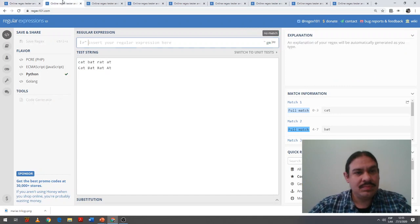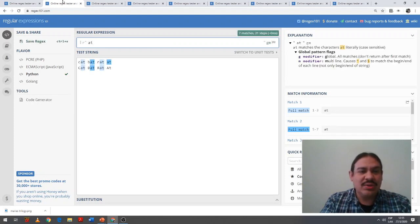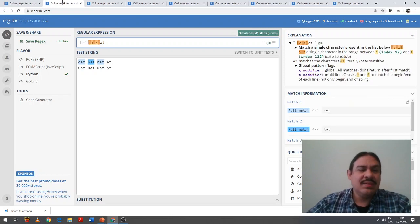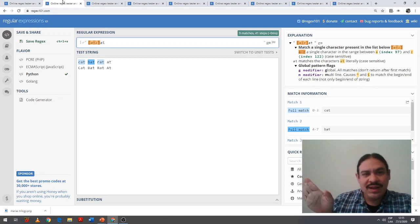For example, we have here cat, bat, rat, at. If we tell it to find the A and the T, it's going to find it in some of them, but it's going to miss part of the words. If we tell it to find everything between A and Z, followed by an A and a T, it's going to find only the lowercase ones, and it is not going to tag the last word of the line, because that one is missing a character. It only has two characters, and the regular expression has three.